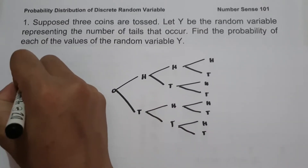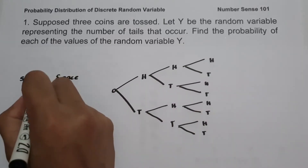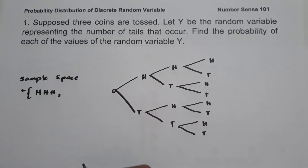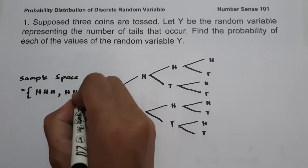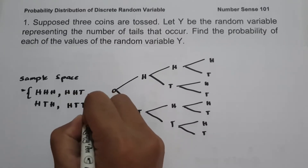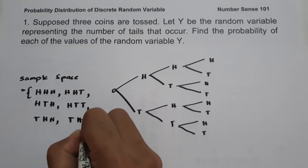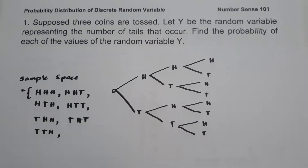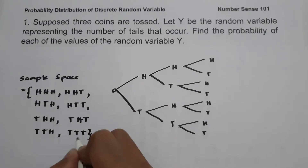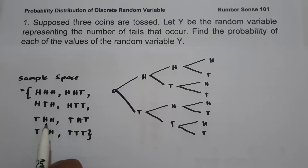Using the tree diagram, the sample space is: HHH, HHT, HTH, HTT, THH, THT, TTH, and TTT — giving us eight possible outcomes.